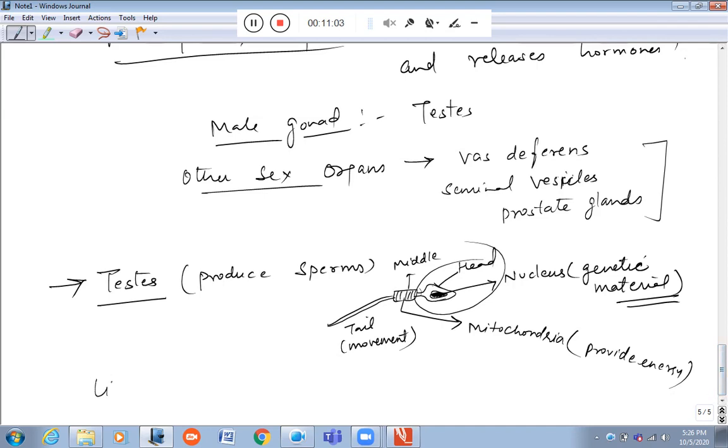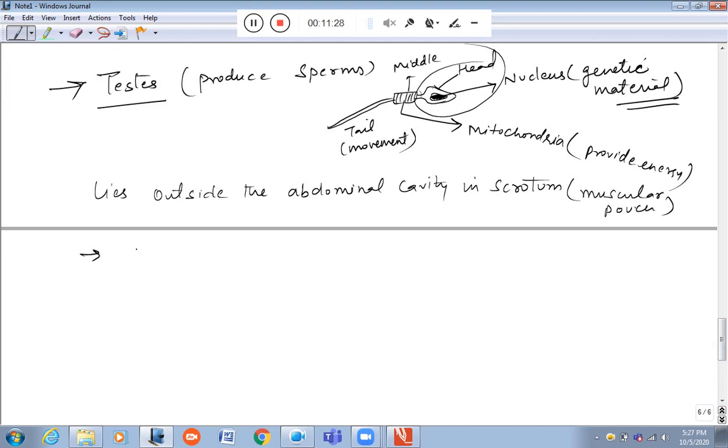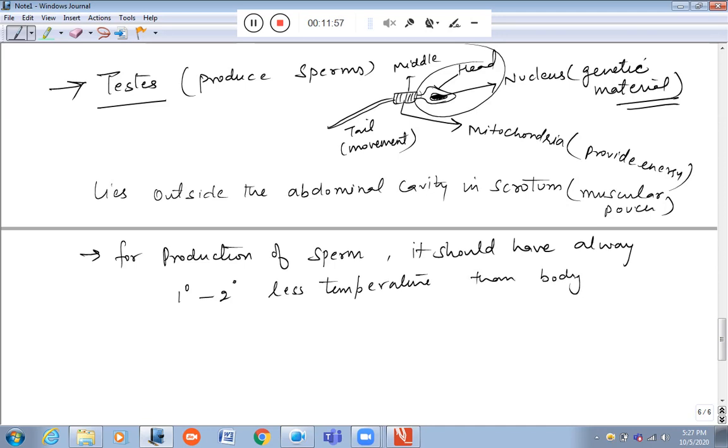Testis lies outside the abdominal cavity in scrotum. Scrotum is a type of muscular pouch. The reason testis lies outside the body is that for the production of sperm, it should have always 1 to 2 degrees lesser temperature than the body temperature. That's why it lies outside the abdominal cavity.